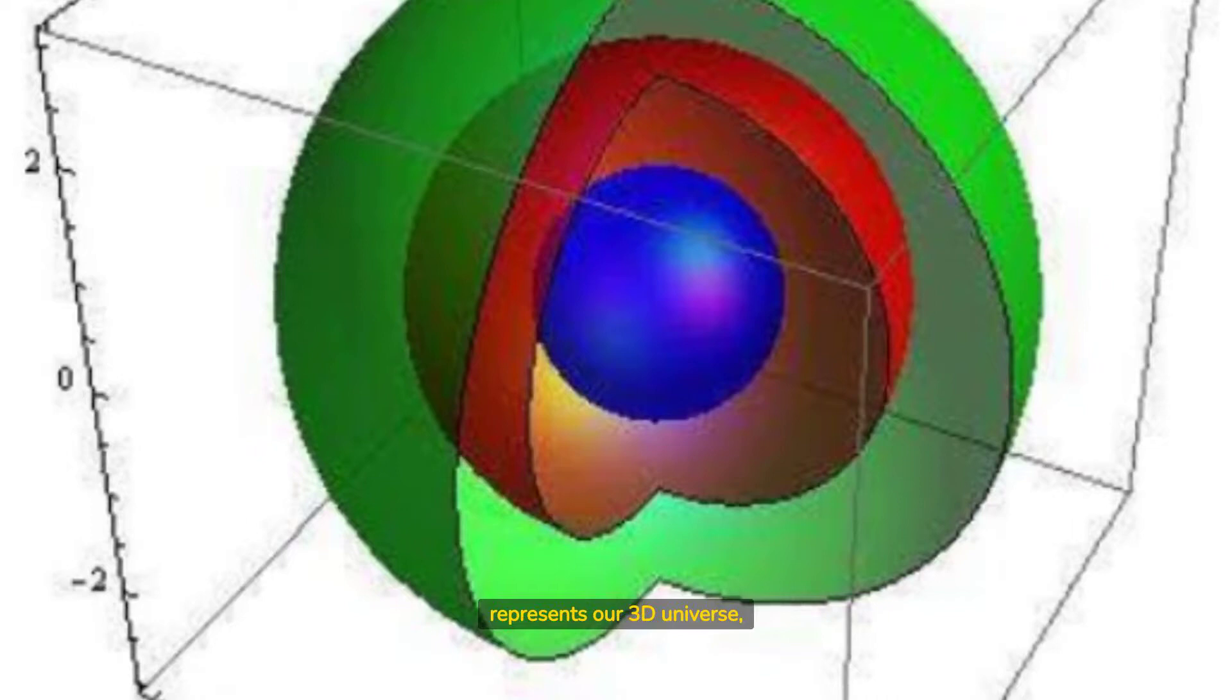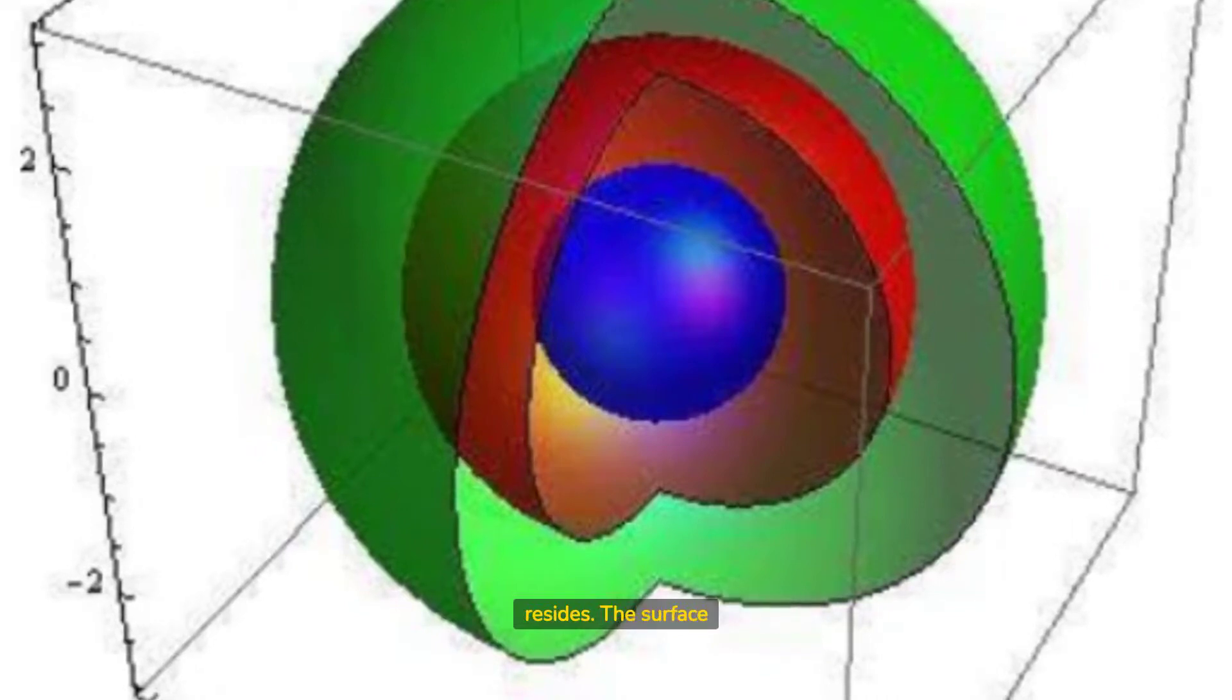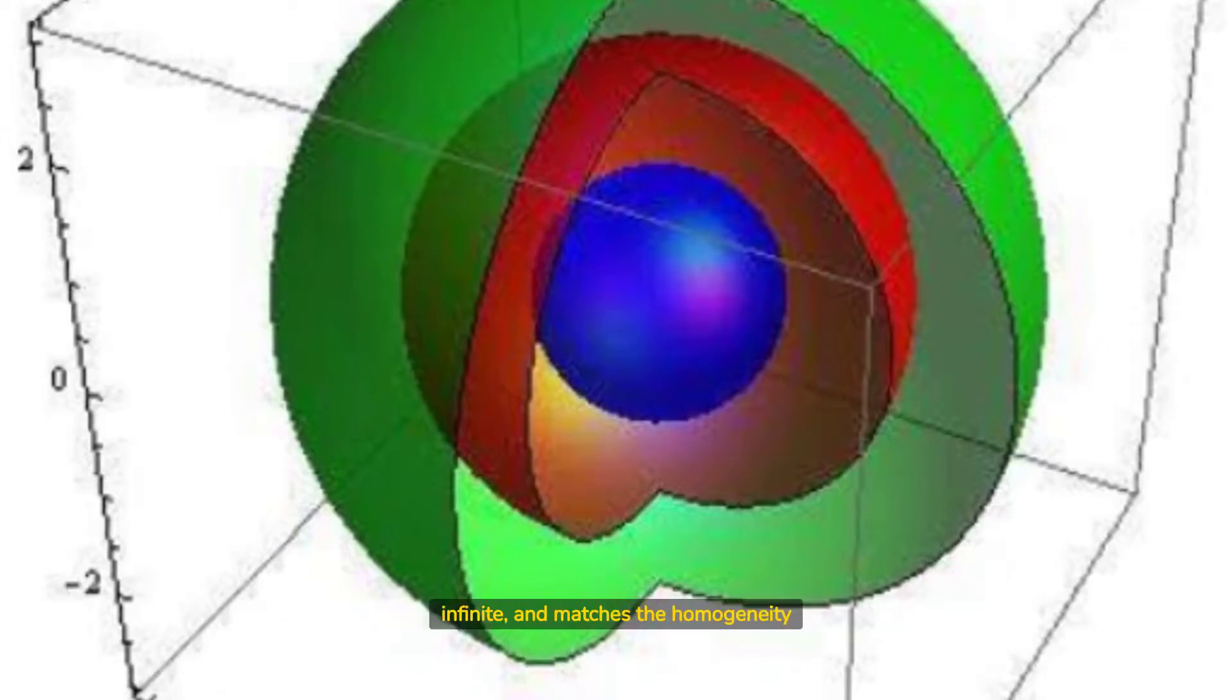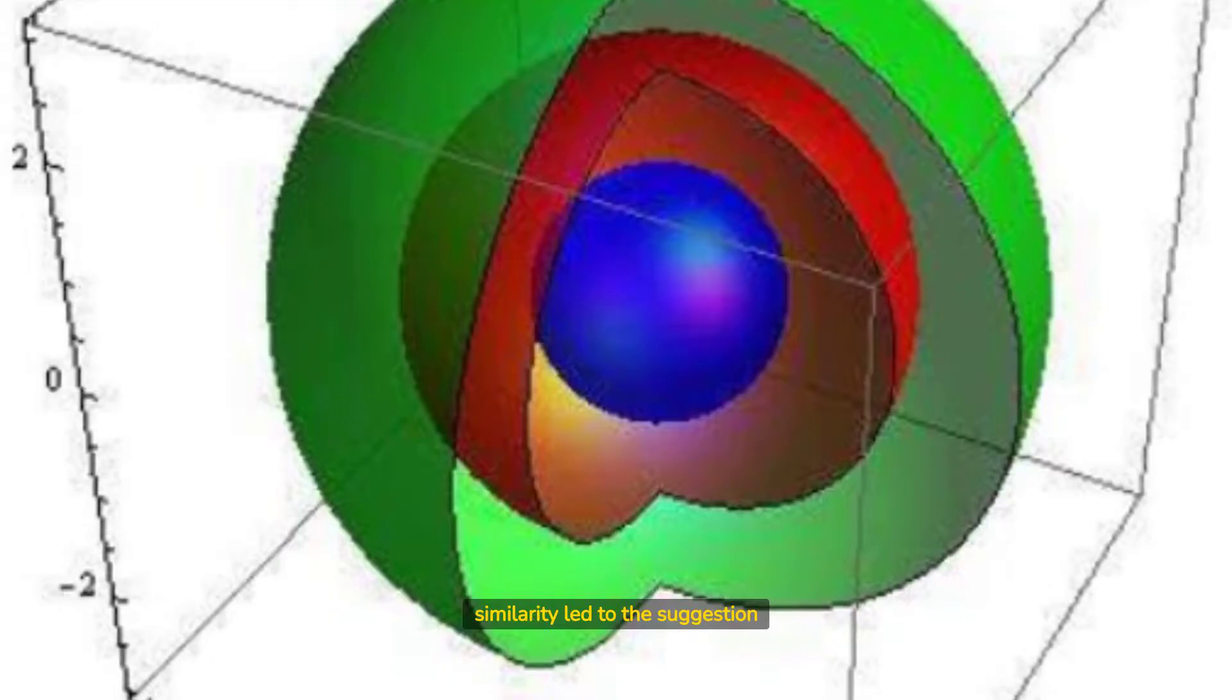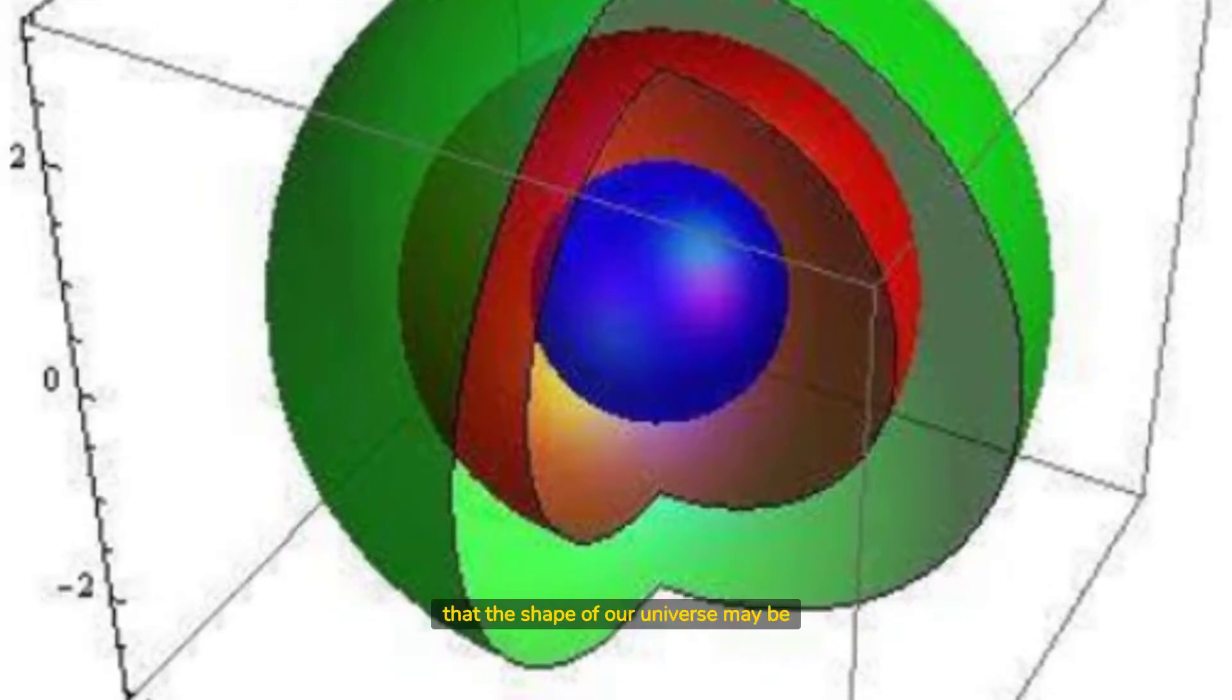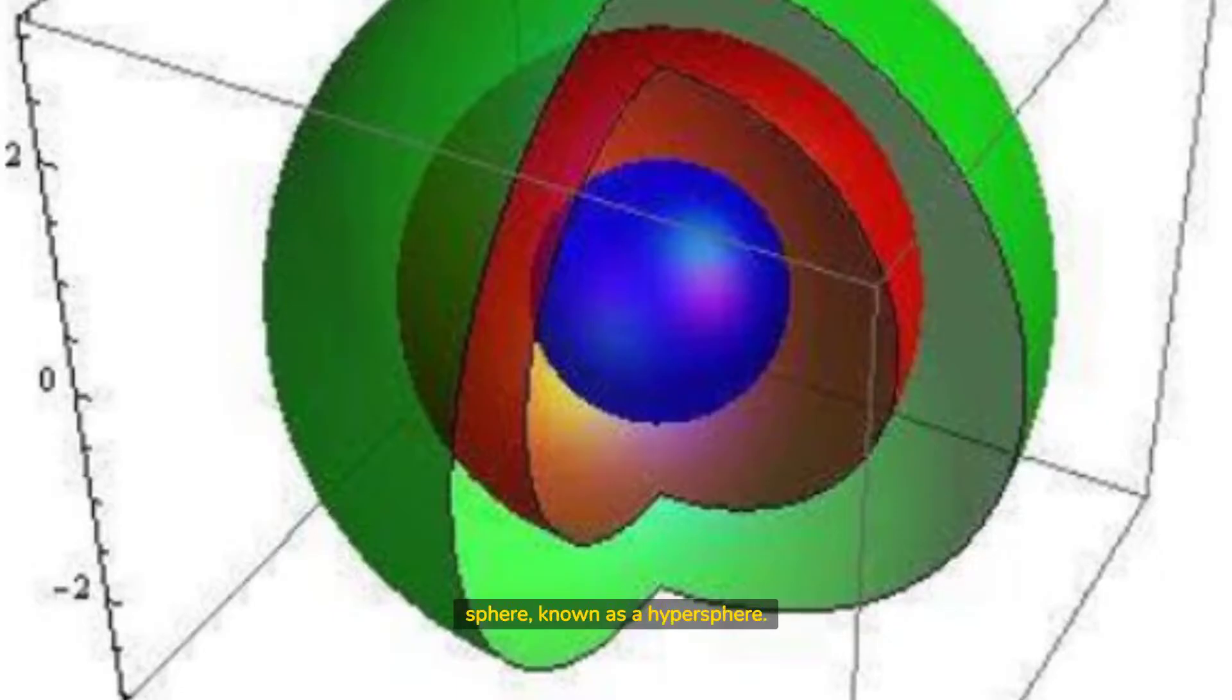The innermost sphere represents our 3D universe, where we live and all normal matter resides. The surface of this sphere is flat and infinite, and matches the homogeneity and isotropy that we witness in our universe. This similarity led to the suggestion that the shape of our universe may be a three-dimensional analog of the surface of a four-dimensional sphere, known as a hypersphere.